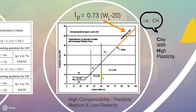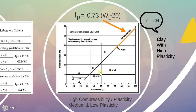If the soil sample has a liquid limit greater than 50% it will be highly plastic. If it is clay then it is CH (clay with high plasticity). If it is organic soil then OH (organic soil with high plasticity). If it is silt then it will be called MH. Same way, if the liquid limit is lesser than 35% it will be considered as low plastic: CL for clay with low plasticity.